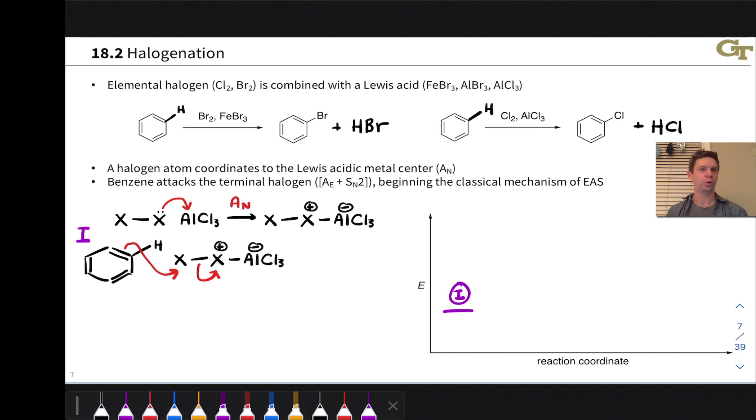It's a halonium ion is one way to think about this. This establishes a new carbon X bond in the resulting arenium ion. And we could think about this as A sub E from the perspective of the benzene ring and SN2 at this halogen atom. That's why both step labels are listed here.